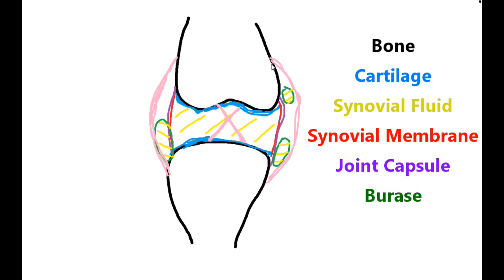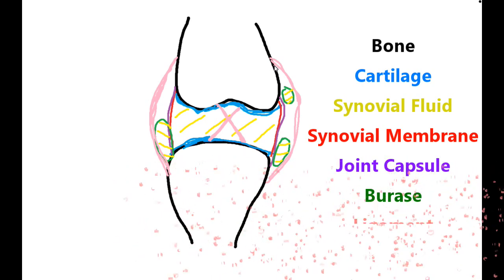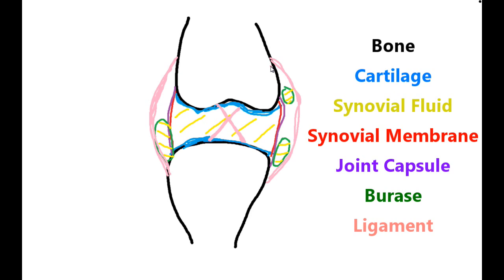Surrounding the joint we also have bursae, which are tiny sacs filled with synovial fluid that aid with absorption of shock and better protection of the joint. And then, encompassing the whole joint, we have ligaments which attach bone to bone and prevent dislocation. So there you have it—the components of your synovial joint.